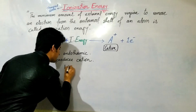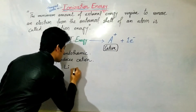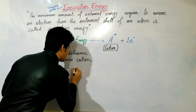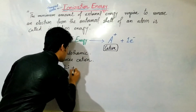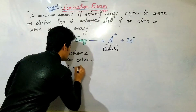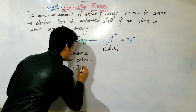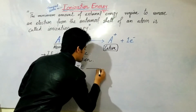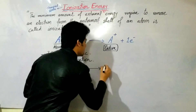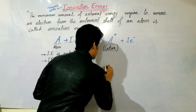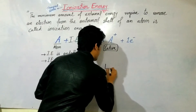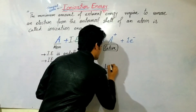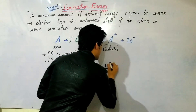As an example, let's take a lithium atom so we can understand this clearly. Suppose we have a lithium atom and we want to apply ionization energy to it. What happens when ionization energy is applied to a lithium atom?